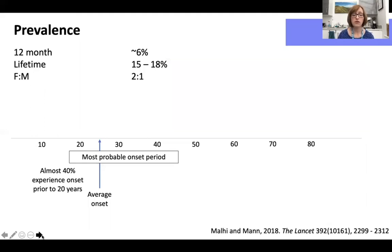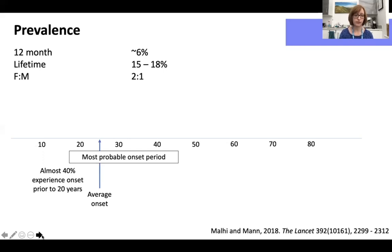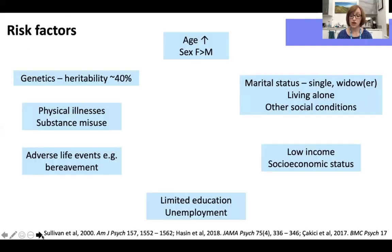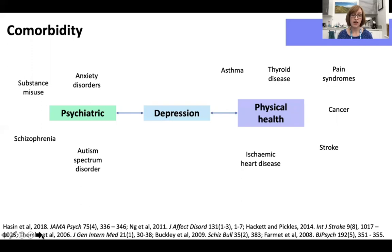The 12-month prevalence of depression is thought to be around 6%, and the lifetime prevalence between around 15 and 18%. The peak of onset extends from mid-to-late adolescence to the early 40s, with a median onset in the mid-20s. Established epidemiological risk factors include age, sex, marital status, and socioeconomic status, and there are elevated rates of comorbidity with other psychiatric and physical health disorders.